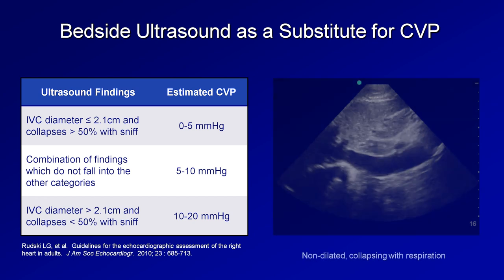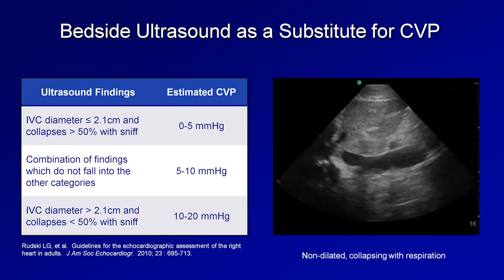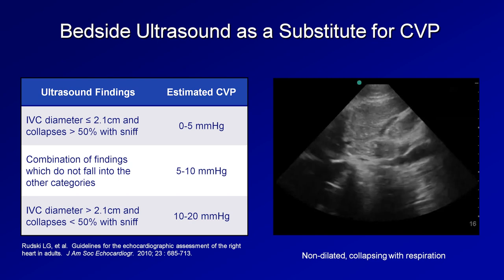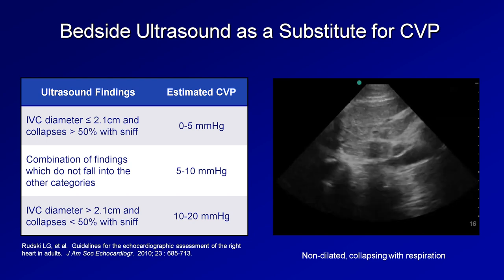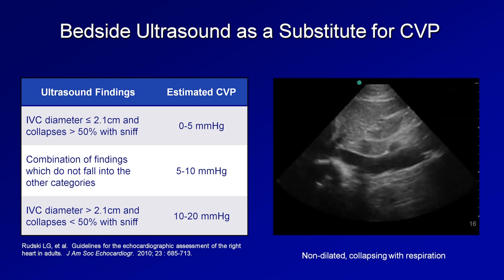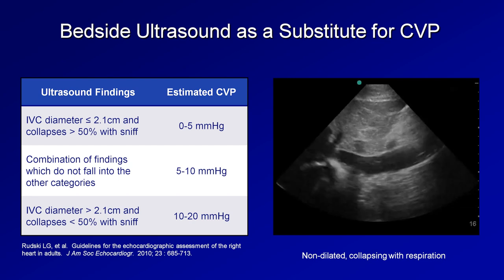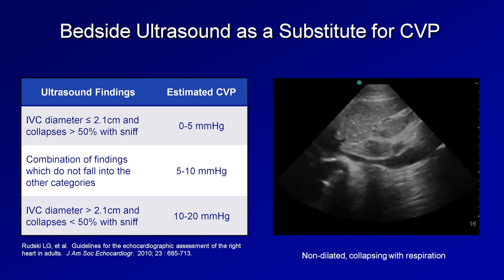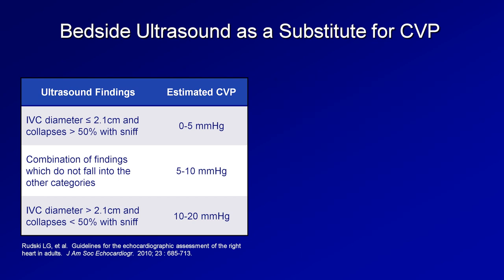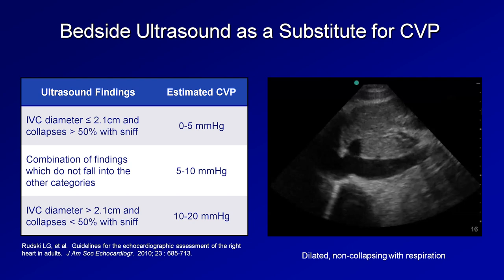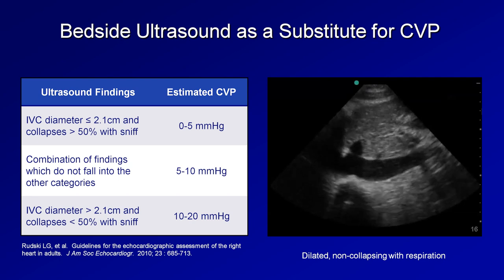Here's an example from a patient with a CVP of 0–5: the IVC is not dilated and collapses with respiration. The IVC width can be manually measured using electronic calipers on the ultrasound machine. And here's an example from a patient with a CVP above 10: the IVC is dilated and not collapsing.